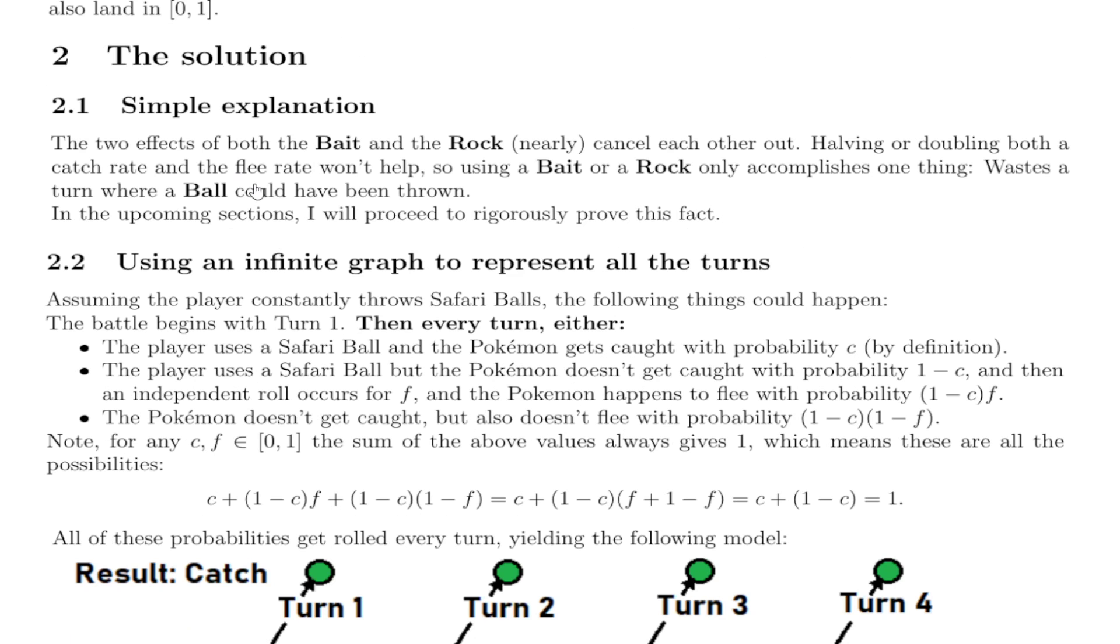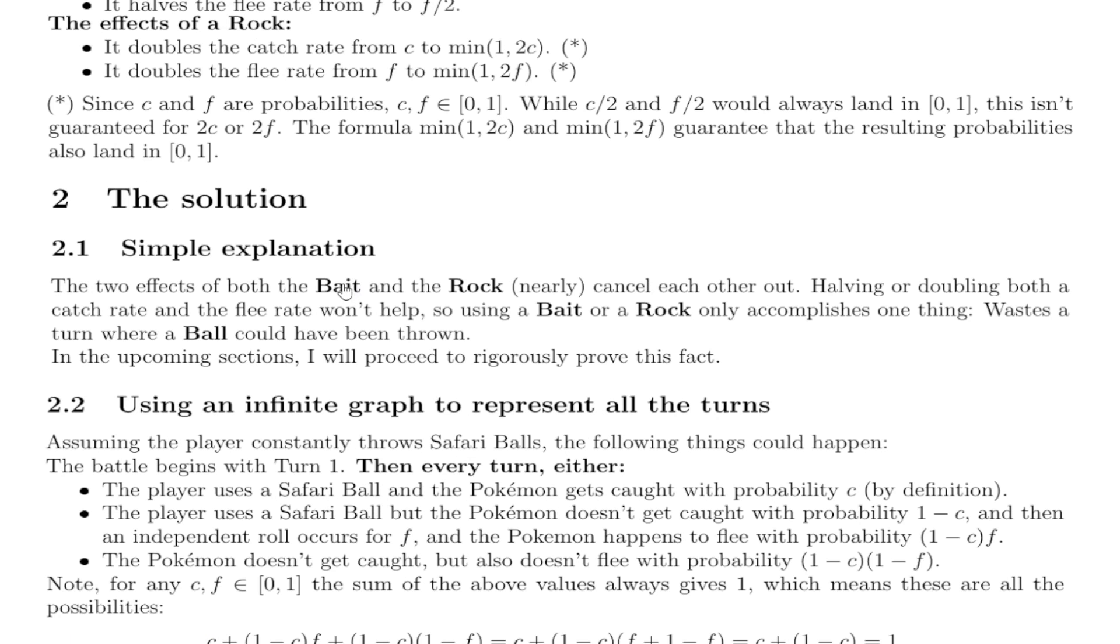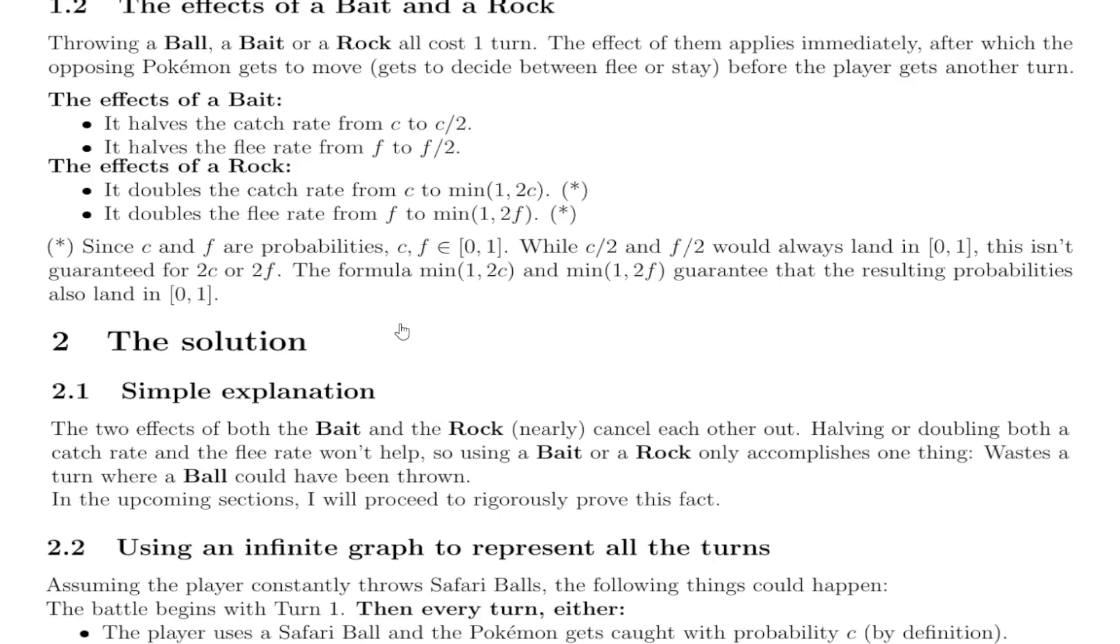Here's the simple explanation. This is probably the most important part of it. So the two effects of the bait and the rock nearly cancel each other out. Having or doubling both a catch rate and a flee rate won't help. So using a bait or a rock only accomplishes one thing, waste a turn where a ball could have been thrown.